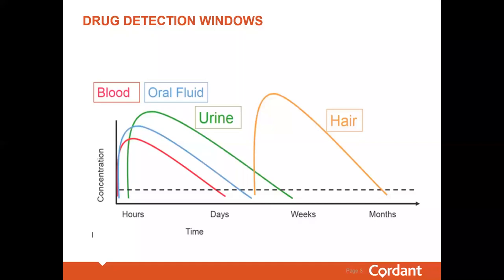This slide represents each matrix and its respective detection window. Blood has the shortest window — usually within a couple of days, all drugs that are ingested have been cleared from the bloodstream and are sent to waste as metabolites. Blood is best for assessing a person's impairment state — are they under the influence currently?